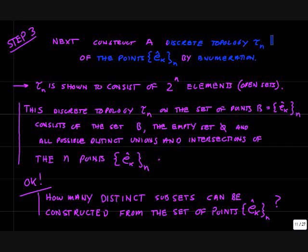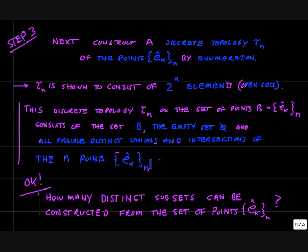τn is going to consist of 2 to the n elements. These are open sets — it's going to consist of the set B of basis points, the empty set, and all possible distinct unions and intersections of the n points Ek. So how many distinct subsets can we construct from the set of points Ek?